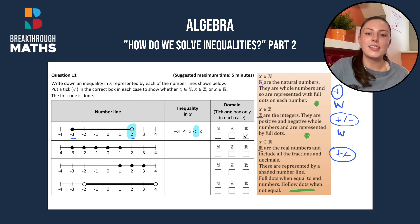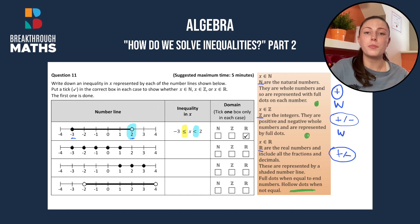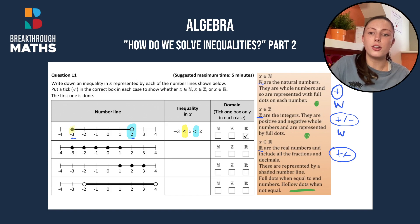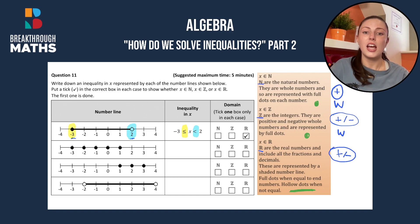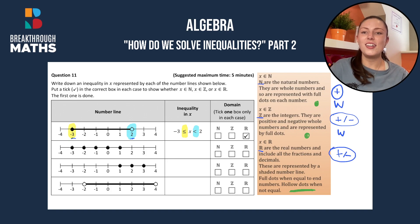Then we see x is greater than or equal to minus 3. That extra dash means it can also be equal to the number, which is why minus 3 is shown as a solid dot — because it's greater than or equal to minus 3.